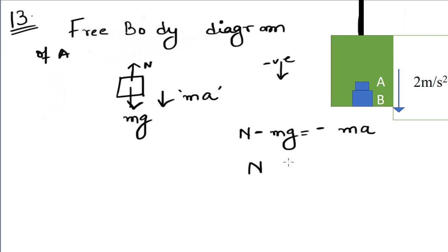Simplifying above equation for normal reaction, N equals m times (g minus a). Substituting the value of mass, that is m equals 0.5 kg, acceleration due to gravity g equals 10 meter per second squared, and acceleration of elevator to be 2 meter per second squared.